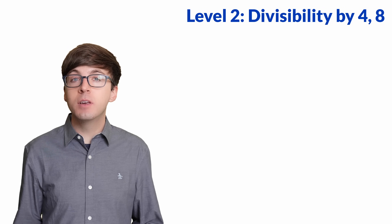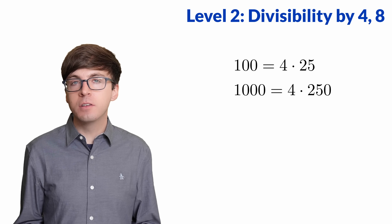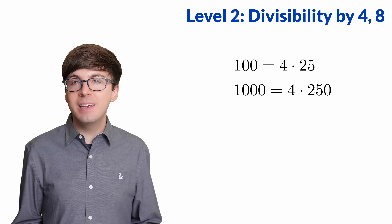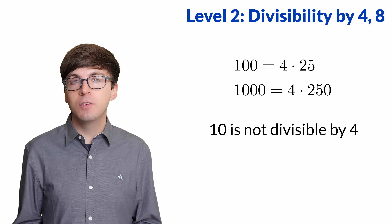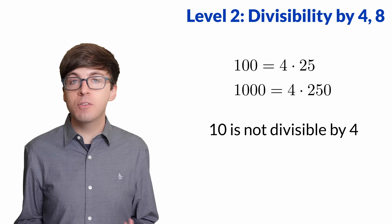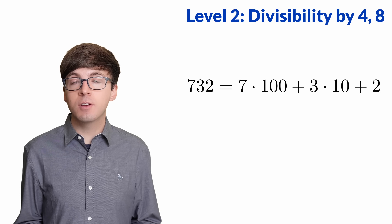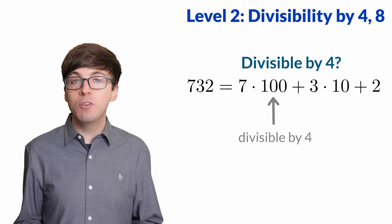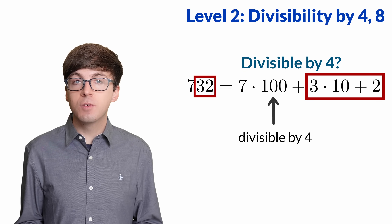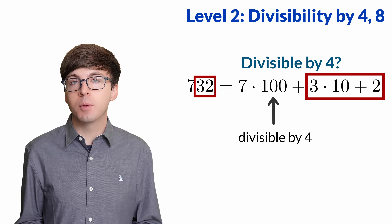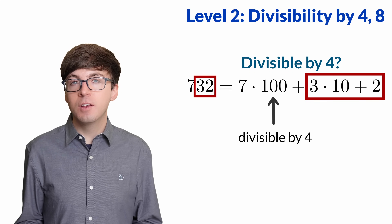For level 2, let's find rules for divisibility by 4 and 8. 100, 1000, and so on are all divisible by 4. But a key difference this time is that 10 is not divisible by 4. So we can ignore the 100's place and higher, but we'll have to check those last 2 digits. For example, if we want to check if 732 is divisible by 4, we can just check the last 2 digits, 32. And since that is divisible by 4, so is the original number.